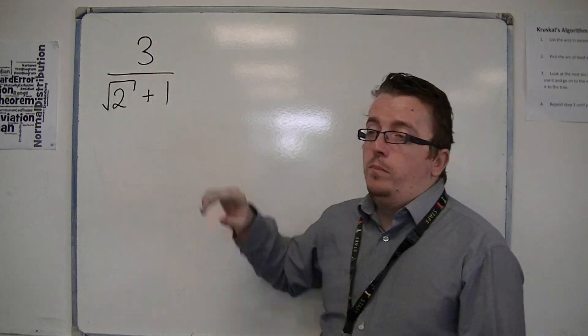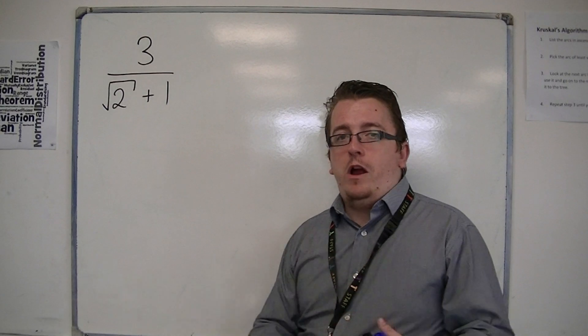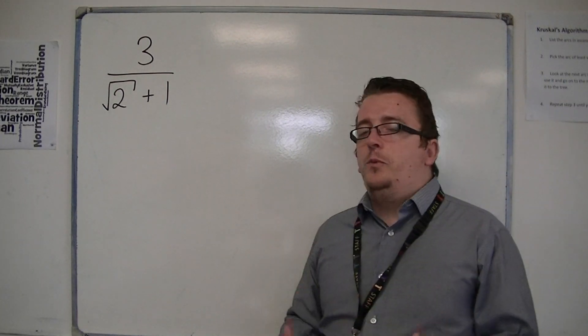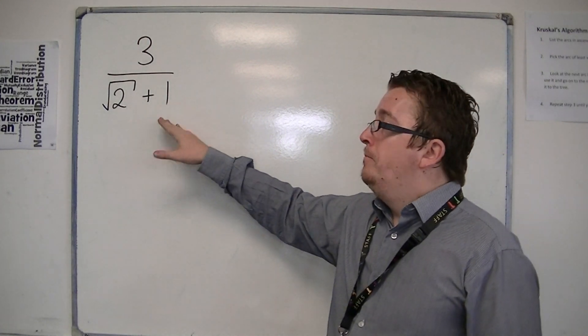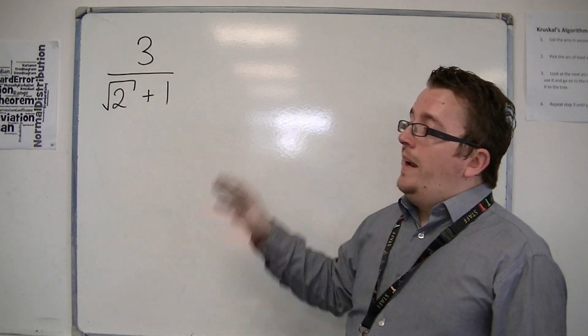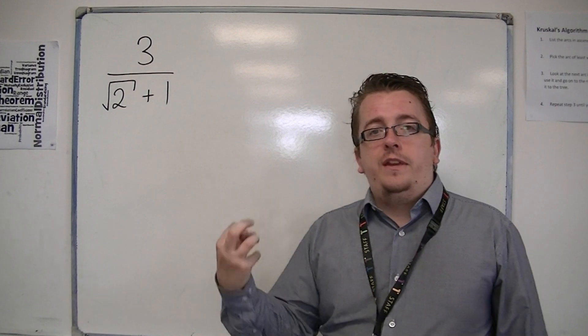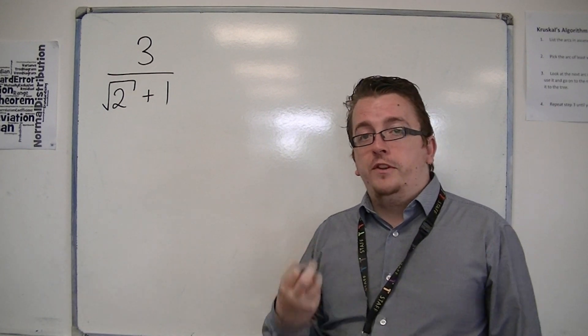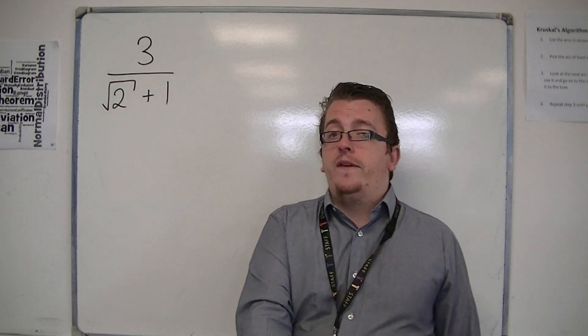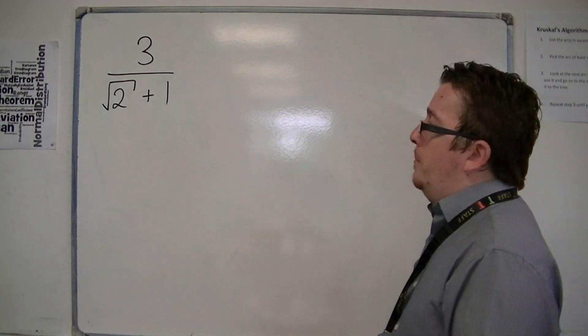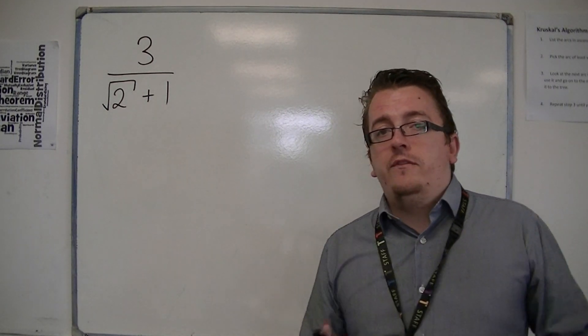So root 2 plus 1 is also irrational. What we need to do is find a way of multiplying this by 1 and effectively eliminating the surd from the denominator. Now that sounds quite complicated in the way that I've said that, but there is a nice way of doing it.